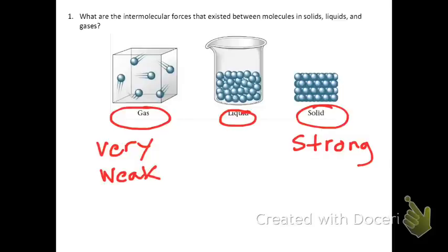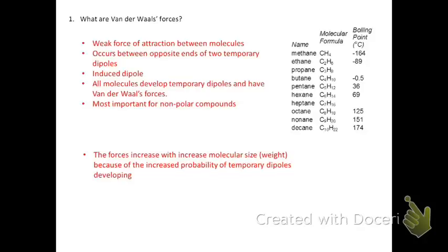To summarize: solids have the strongest intermolecular forces that hold those molecules together tightly packed. Gases have the weakest intermolecular forces, so the molecules are free to move about independently. In the liquid state, they have somewhat strong forces, but not so strong that they're rigid, so the molecules are free to flow around. Now let's look at our first intermolecular force: Van der Waals forces. The main points to note are that Van der Waals forces are weak, attractive forces — they are the weakest intermolecular forces.